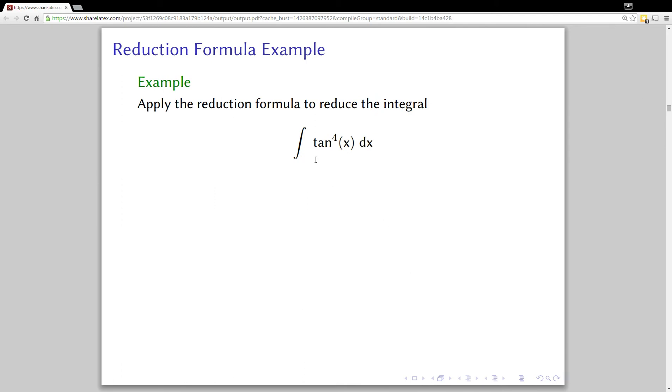Let's apply the reduction formula to some higher power, tan to the fourth. Really, this one, what you could do is separate off a tan squared and then use the identity again to boil that down potentially. So here's the reduction formula, and in this case n would be equal to 4.